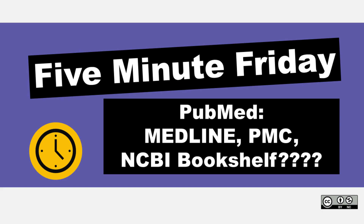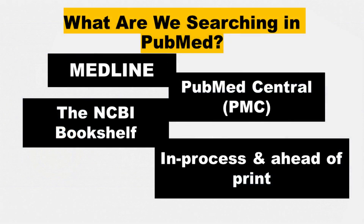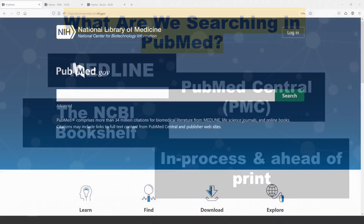Hi, it's Keri with another 5-Minute Friday. In this 5-Minute Friday, we're going to search PubMed, and I'm going to show you how you can limit to Medline only or to PMC only. I wanted to do this because I've seen a lot on Twitter lately about what's contained in PubMed and what's the difference. When you're searching PubMed, you are searching Medline, which is the major component of bibliographical literature contained within PubMed. You are also searching PMC, or PubMed Central, the free open access archive of bibliographic literature. And you're also searching the NCBI bookshelf.